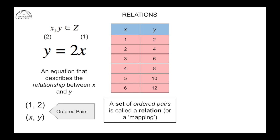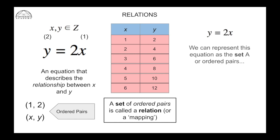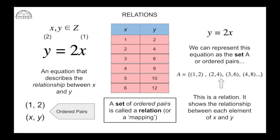A set of ordered pairs is called a relation or a mapping. So when we have the equation y = 2x, we can represent it as a set. Here the set A is equal to the set of ordered pairs — and the dot dot dot means it goes on. This set represents a relation, showing the relationship between each element of x and y.